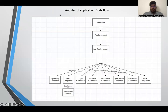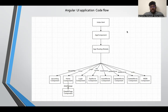This is the Angular UI application code flow. First, we created an index.html file and added some components into it. From there we wrote our routing module. From the routing module you can choose whatever page you want to visit — upcoming movies, home, login, insert movies, update movies, delete a movie, or view IMDB ratings.